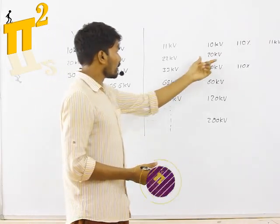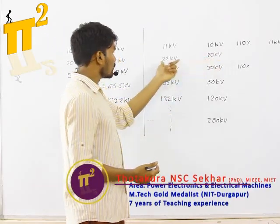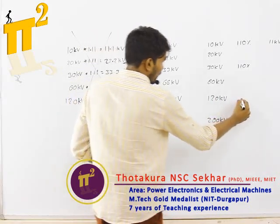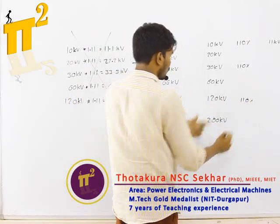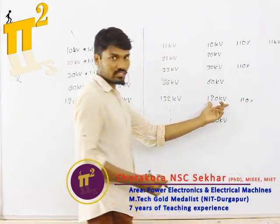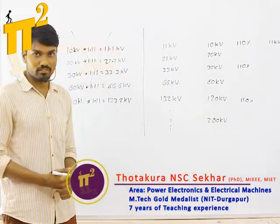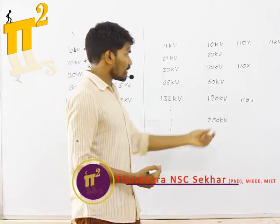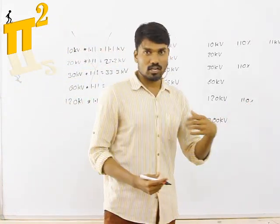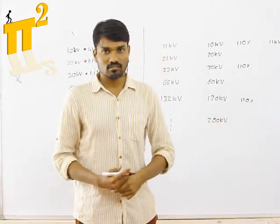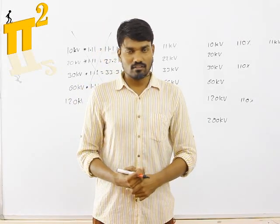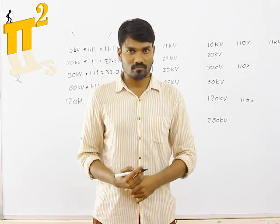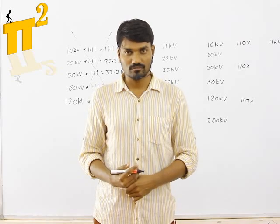And 110 percent of 120 kV is 132 kV. So this 10 percent extra is what they are allocating and estimating for the transmission voltage drop.